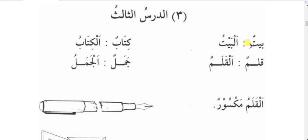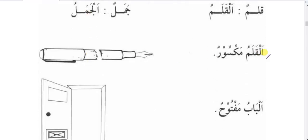Examples: baitun — a house; al-baytu — the house; kitabun — a book; al-kitabu — the book; qalamun — a pen; al-qalamu — the pen; jamalun — a camel; al-jamalu — the camel. Al-qalamu maksoorun — the pen is broken. Al-qalamu is muptada because it is marifa, and maksoorun is khabar because it is nakera. This muptada-khabar forms a jumla ismiyya, a complete sentence.